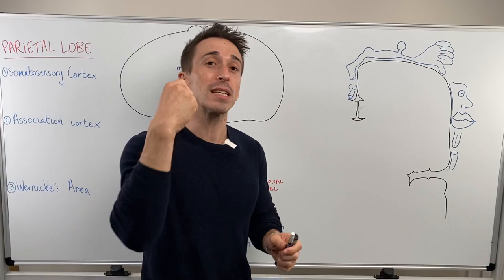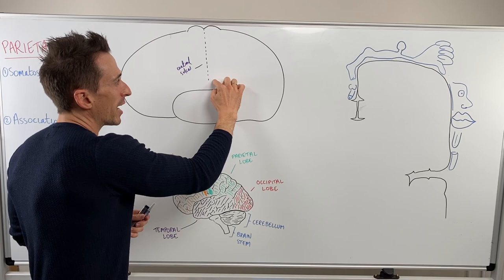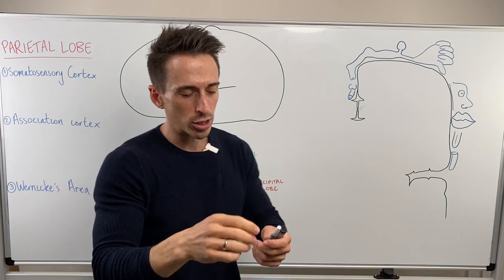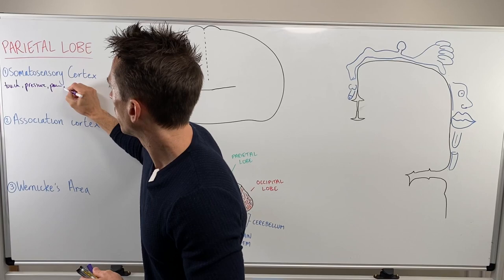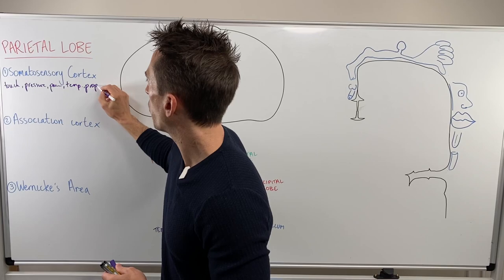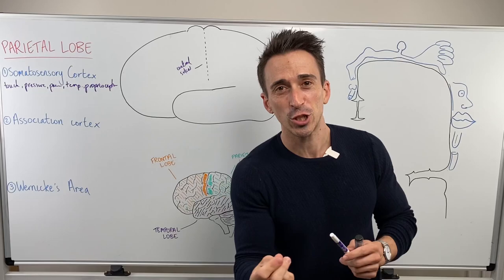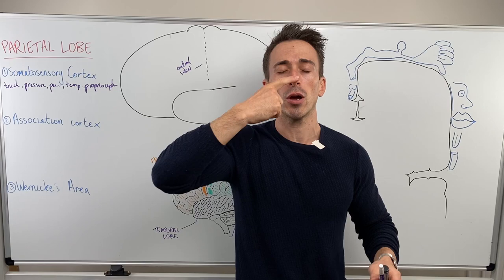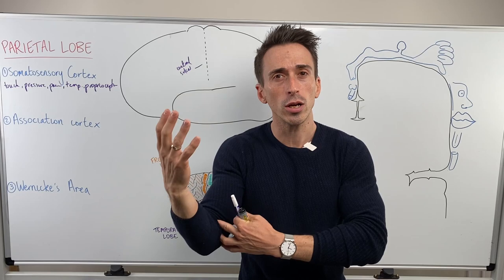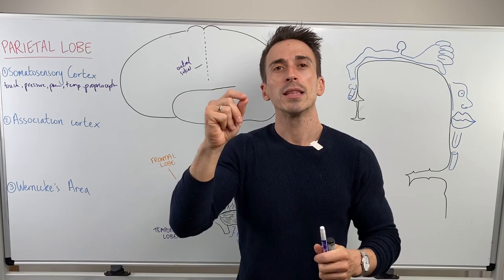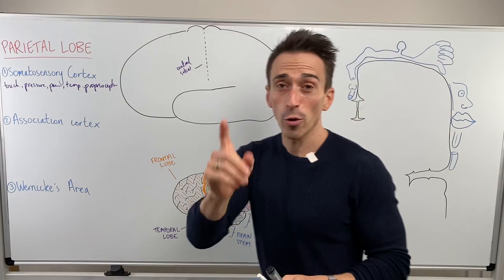Anytime these areas have some sensation, it's going to be sent up to this area called the somatosensory cortex, which is in the post-central gyrus. What we are getting here is touch, pressure, pain, temperature, and proprioception. Proprioception is knowing your posture and position — knowing with my eyes closed that my arm is out here, I know where it is. If I can touch my nose with my eyes closed, it's because we've got various types of receptors in our joints, muscles, and areas like that that tell us where we are in space. That's proprioception.